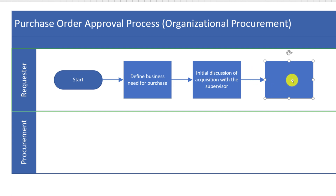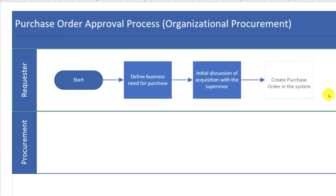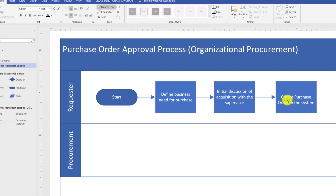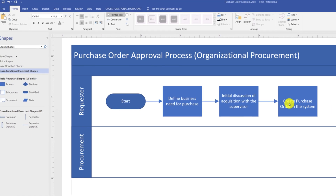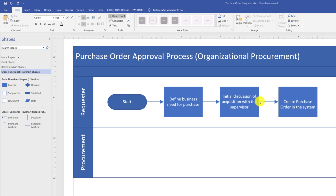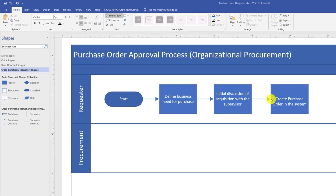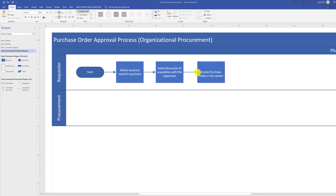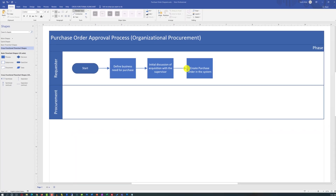As a last step, type the text by double-clicking on the shape. By using the third method, we've accomplished multiple objectives: we created a new shape, a new line was automatically added, and the shape was placed along with other shapes to make the diagram look very professional.